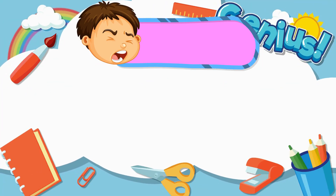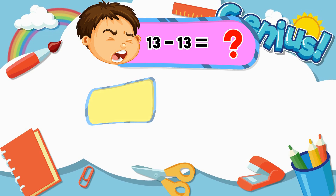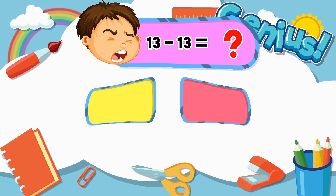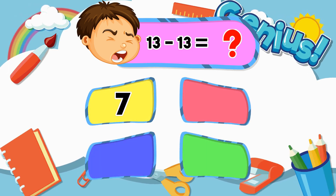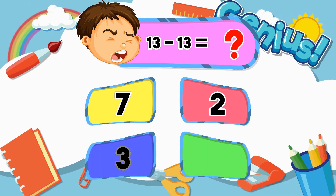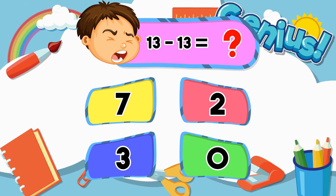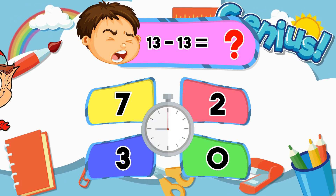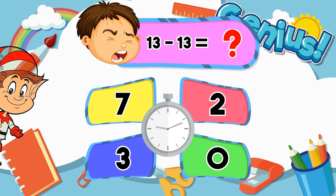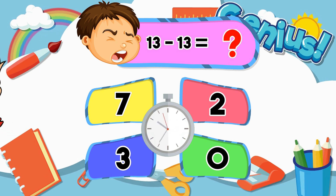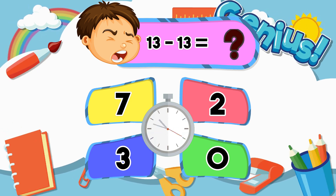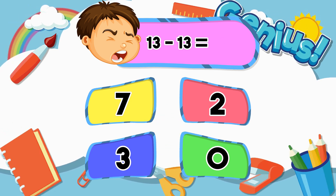What is 13 minus 13? 7, 2, 3. Answer: 3.